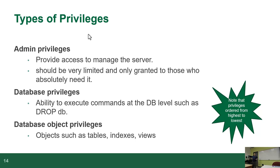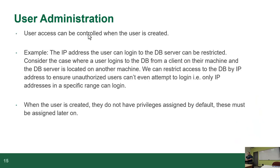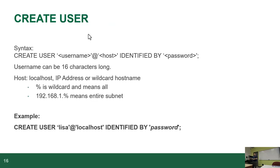Database object privileges are lower-level — like being allowed to SELECT from tables or views. Less dangerous. For user administration: user access can be controlled when the user is created, including the IP addresses they're allowed to log in from. When a user is created, they have no privileges assigned by default — they're allowed to do nothing. You have to grant them permissions explicitly. In MySQL, the syntax is: CREATE USER 'username'@'host' IDENTIFIED BY 'password'.